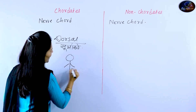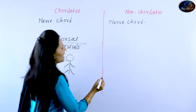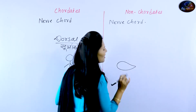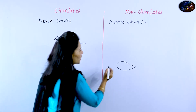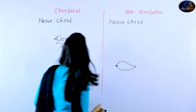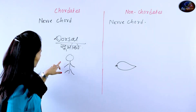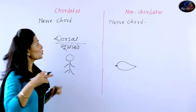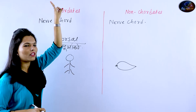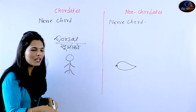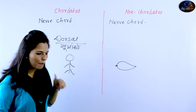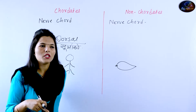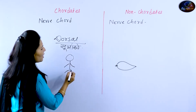This is our human being diagram and we have a non-chordate diagram as well. We have a little bit of a nerve cord diagram to compare.